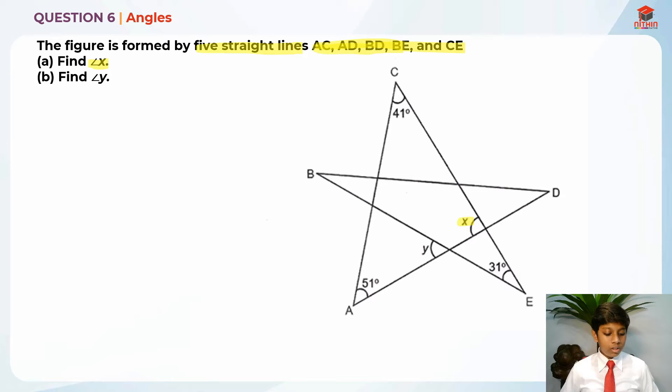For part A, they are telling us to find angle X. Angle X is over here. In order to find angle X, I'm going to spot a clue. We know these three angles. What can I make use of three angles? If you actually focus clearly, you know that all of these are straight lines. So actually, this is a triangle over here. Let me highlight it to you. This area over here is actually a triangle.